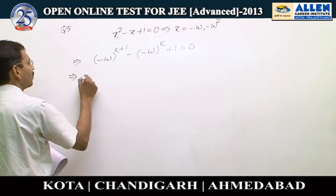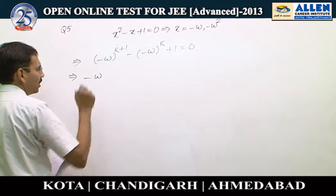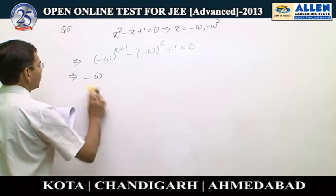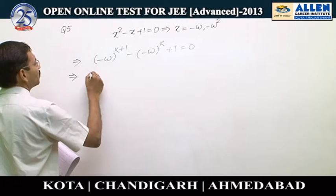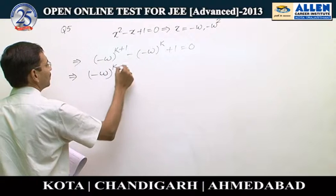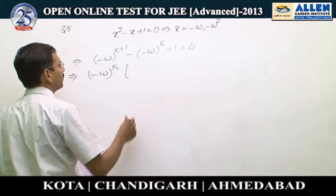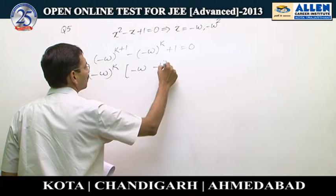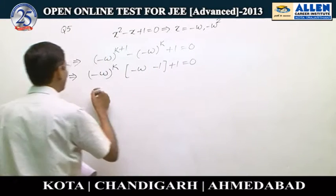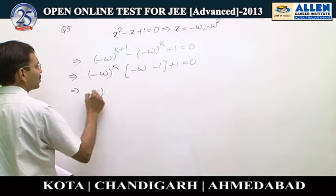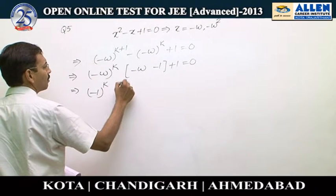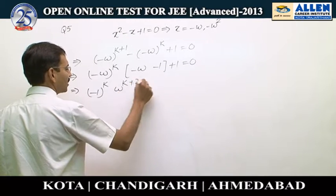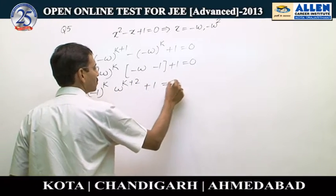We take (-ω)^k as a common factor. The rest of the expression will be -ω - 1 + 1 = 0. This is (-1)^k · ω^k. This expression is ω², that is why we can write it as ω^(k+2) + 1 = 0.